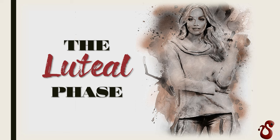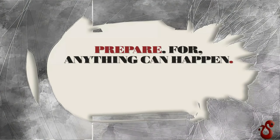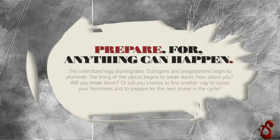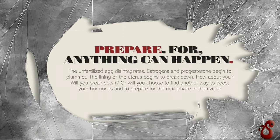Next is the luteal phase, which is often the most tricky and hard to balance because there's so much happening. The theme I chose for this phase is to prepare, or to be ready — anything can happen during this phase. The unfertilized egg disintegrates, estrogen and progesterone begin to plummet, and the lining of the uterus begins to break down. So will you break down during this phase, or will you decide to create something new to boost your hormones and prepare for the next phase?